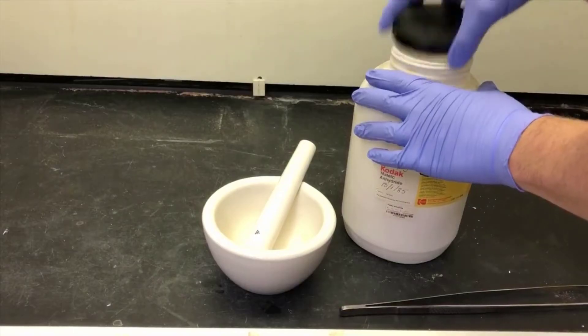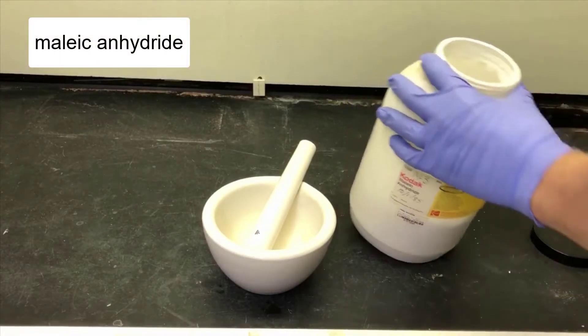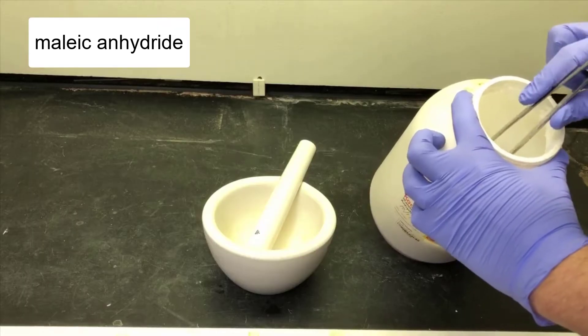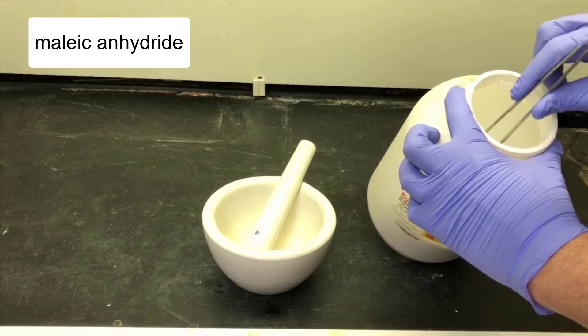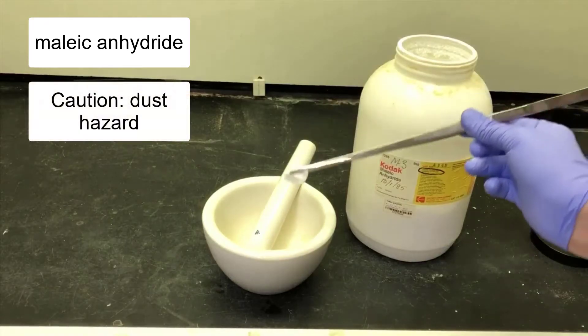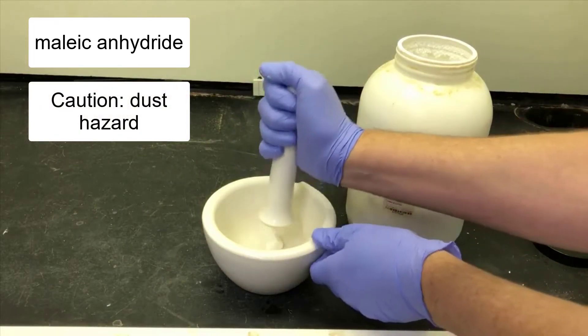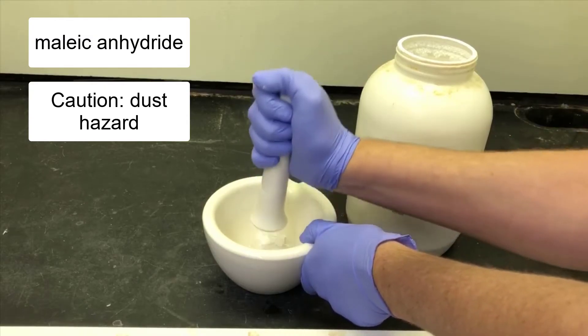The first reagent I'll add is maleic anhydride. Our bottle of maleic anhydride comes as briquettes rather than a powder, so to make it easier to weigh out, I'm going to grab one of these chunks and grind it in a mortar and pestle. Since maleic anhydride has irritating and corrosive dust, I'll need to do this operation in the fume hood.